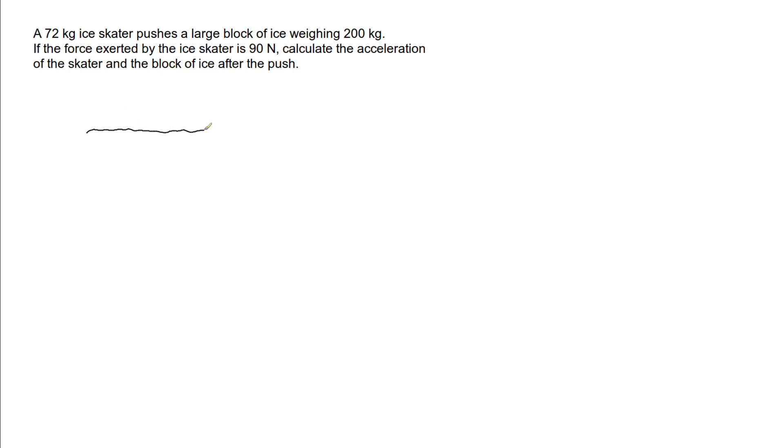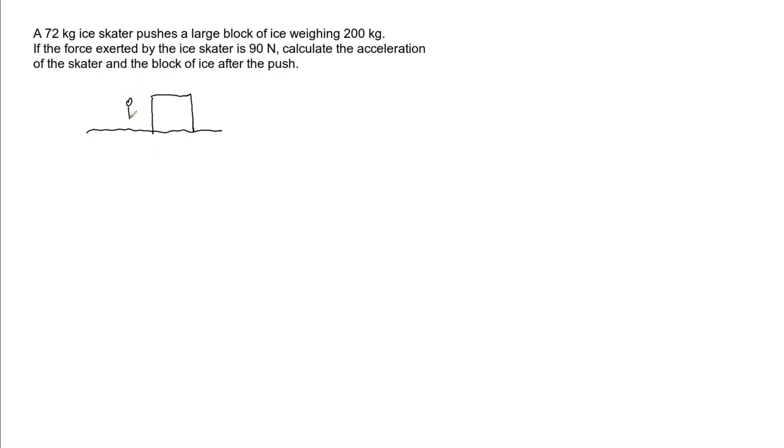Hi, in this video I'm looking at this problem here where we've got an ice skater pushing on a large block of ice. The ice skater is exerting a force of 90 newtons and we want to calculate the acceleration of both the skater and the ice after the push. We've got a very smooth surface of ice, with a large block of ice sitting on that surface, and then an ice skater has come up and given that block a push.